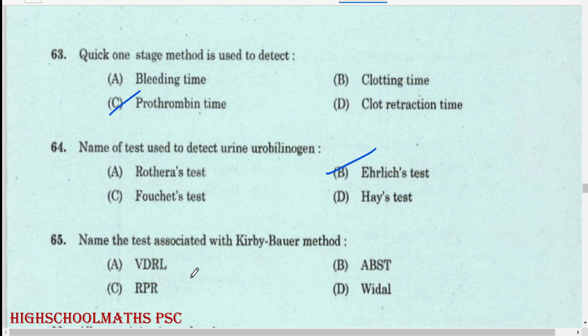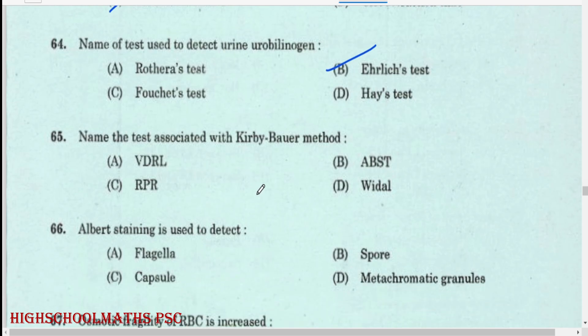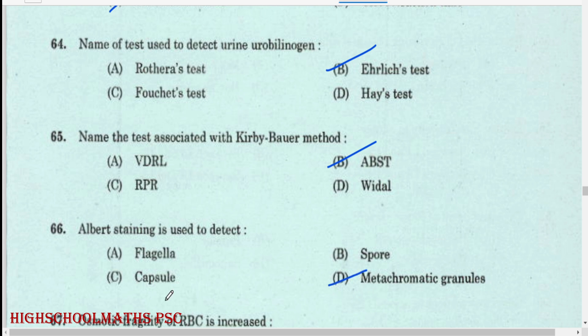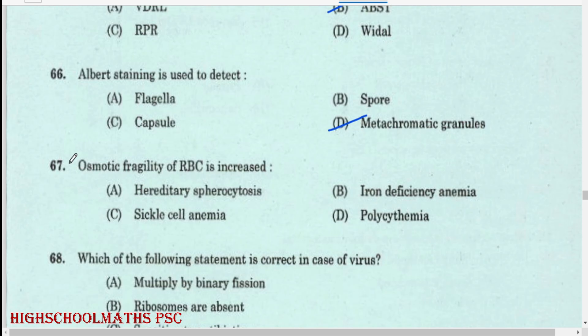Name the test associated with Kirby-Bauer method: ABST (Antibiotic Sensitivity Test). Albert staining is used to detect: metachromatic granules.